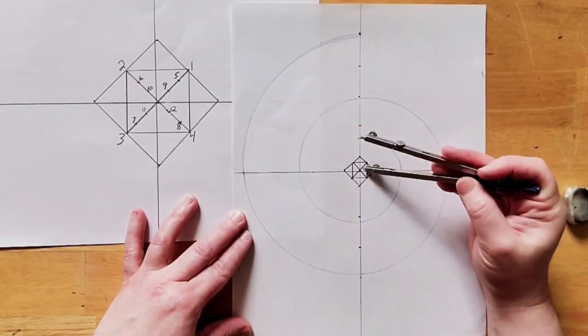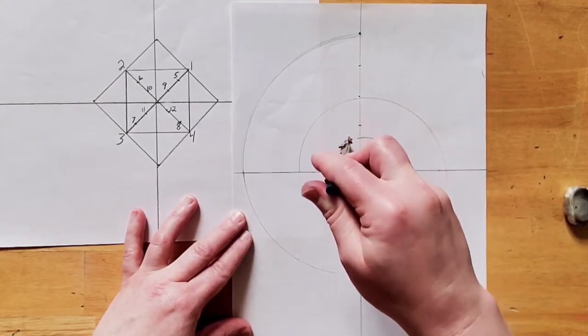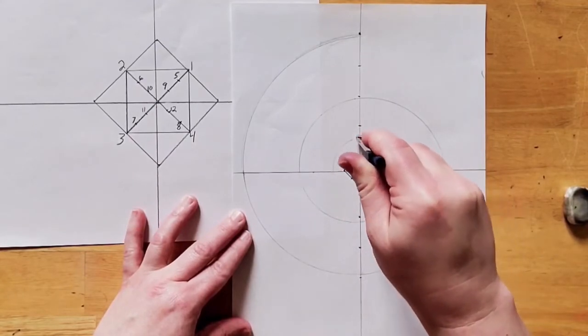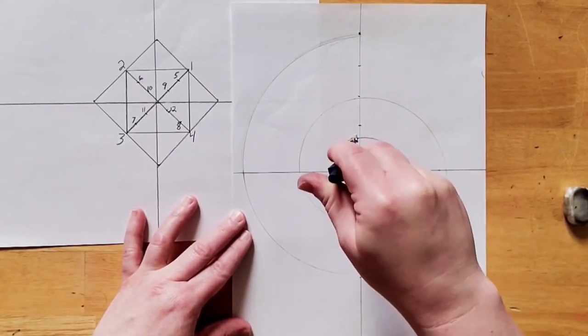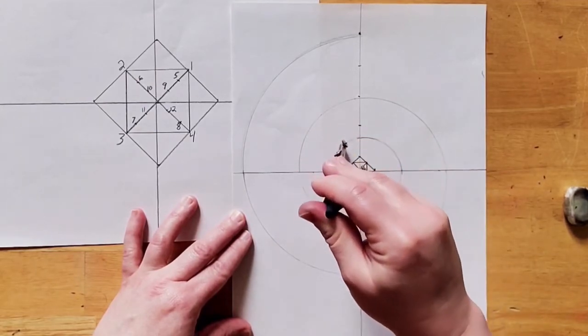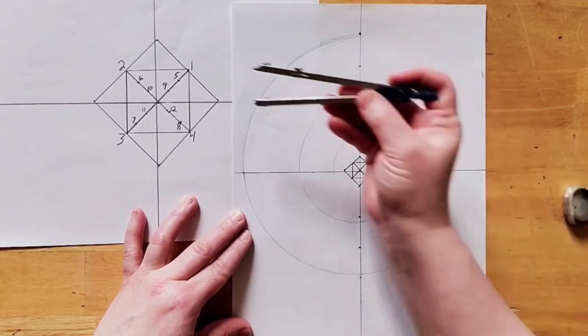Now we move to our inner marks. Starting at nine, we continue our spiral around. You may have to go over the line a couple of times if it's too faint.